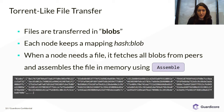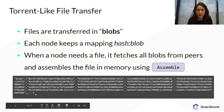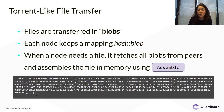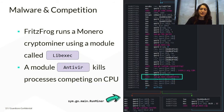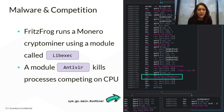What you see here at the bottom of the slide is the blobs available to a certain node in the network, which we gathered by sending this node the getdb command. A nice use of the assemble module can be seen in the cryptominer module. FritzFrog runs a Monero cryptominer — a compiled version of XMRig — and the module responsible for the cryptomining is called lib-exec.